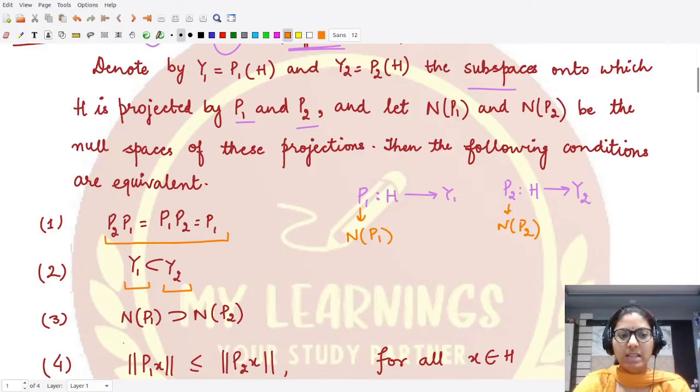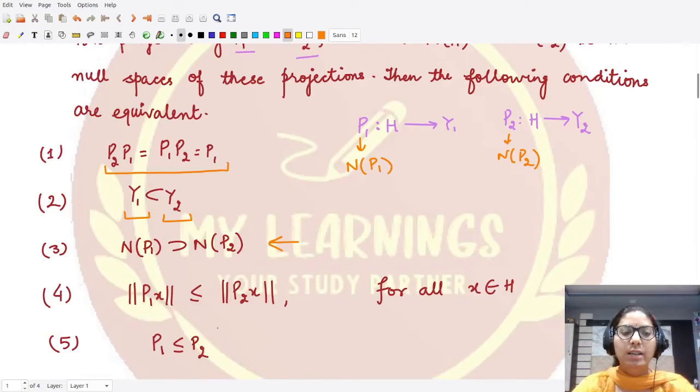The fourth result is that the norm of P₁x is less than or equal to P₂x, and using this thing we will achieve our fifth result, that would be P₁ less than or equal to P₂. So here all these five statements are true whenever one of them is given to be true and whenever P₁ and P₂ are given to be projections.